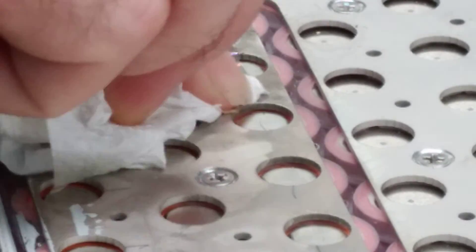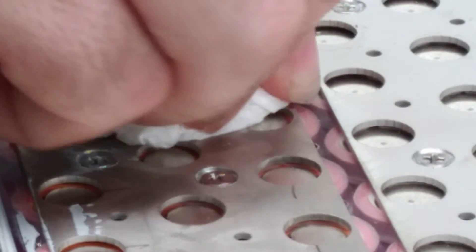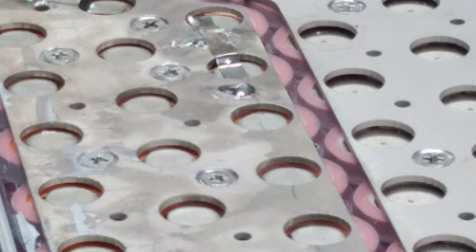And that solder blob is stuck good and proper to that surface. So now I can solder a tab to it.